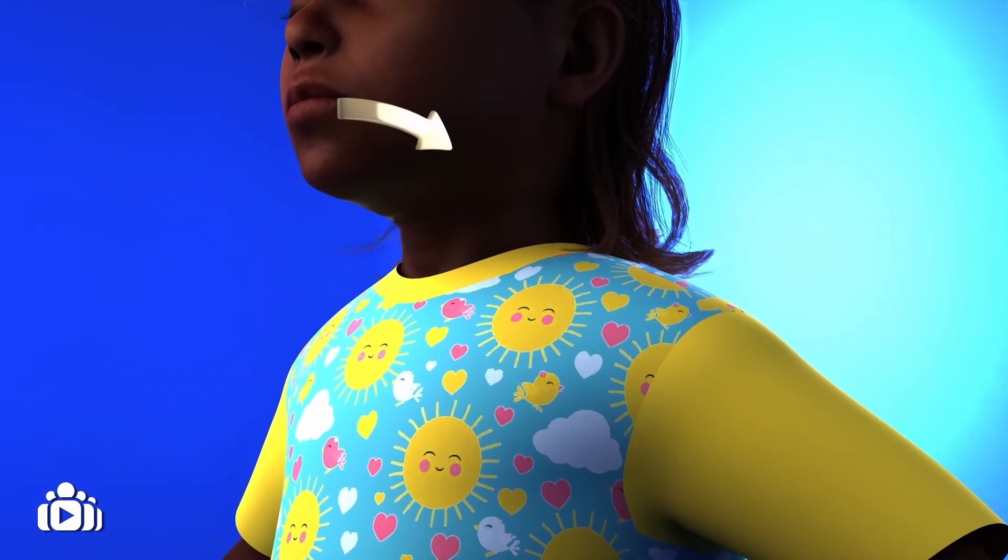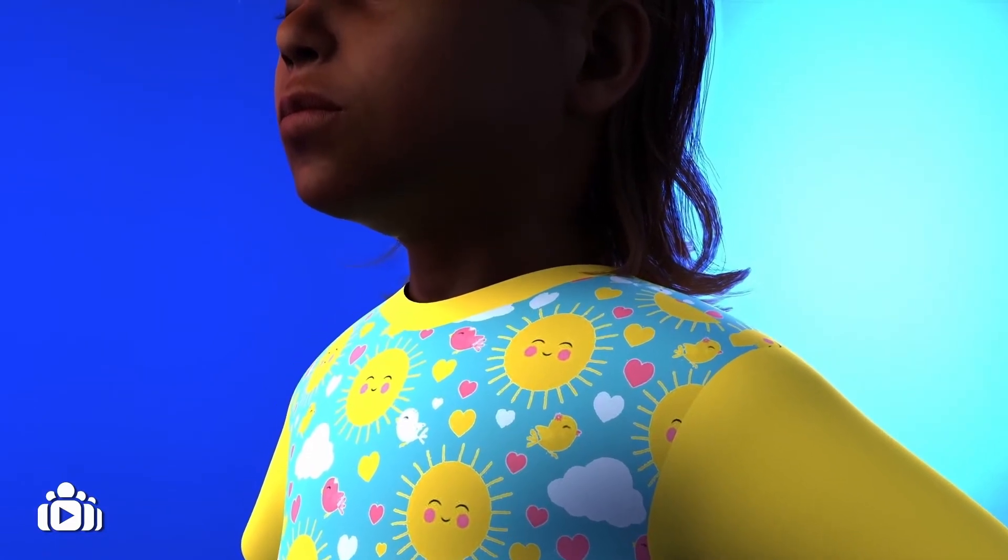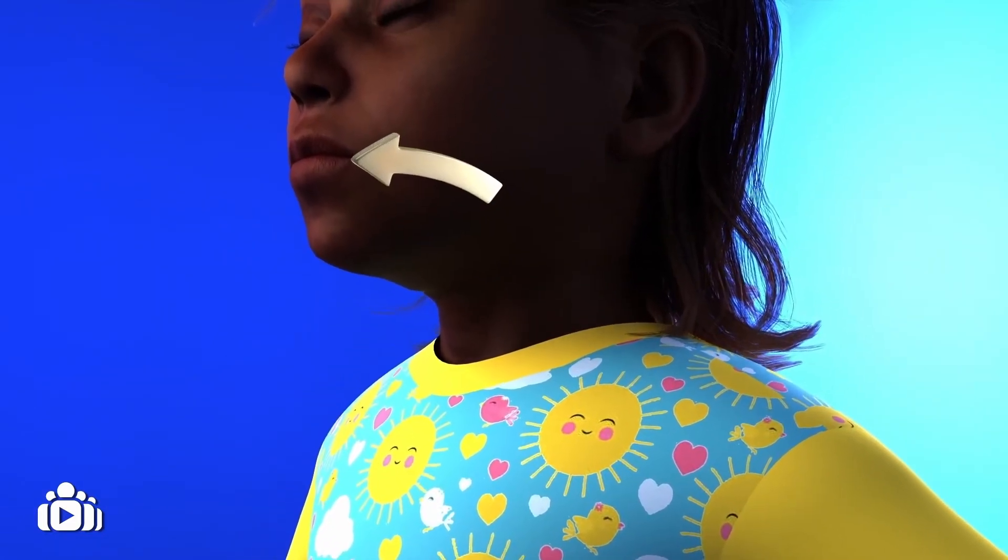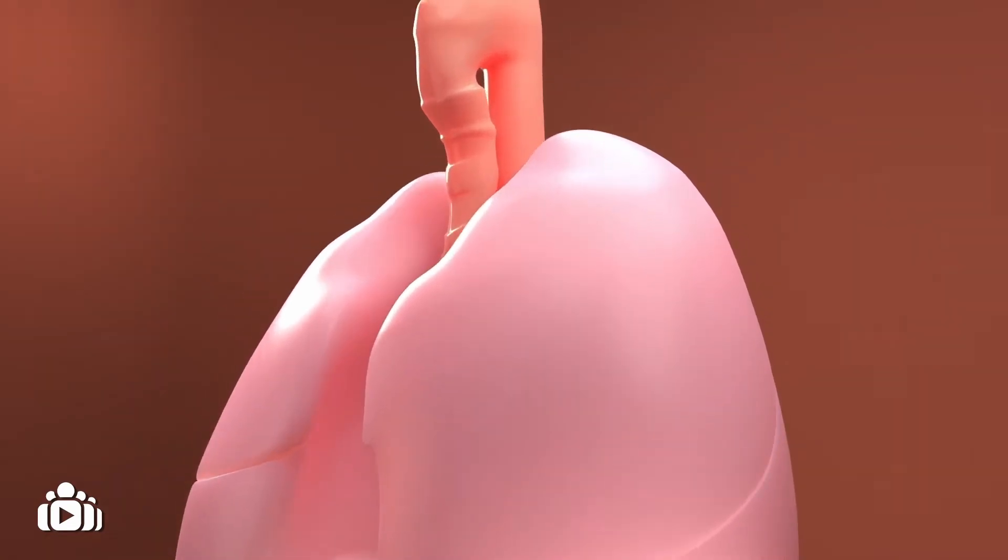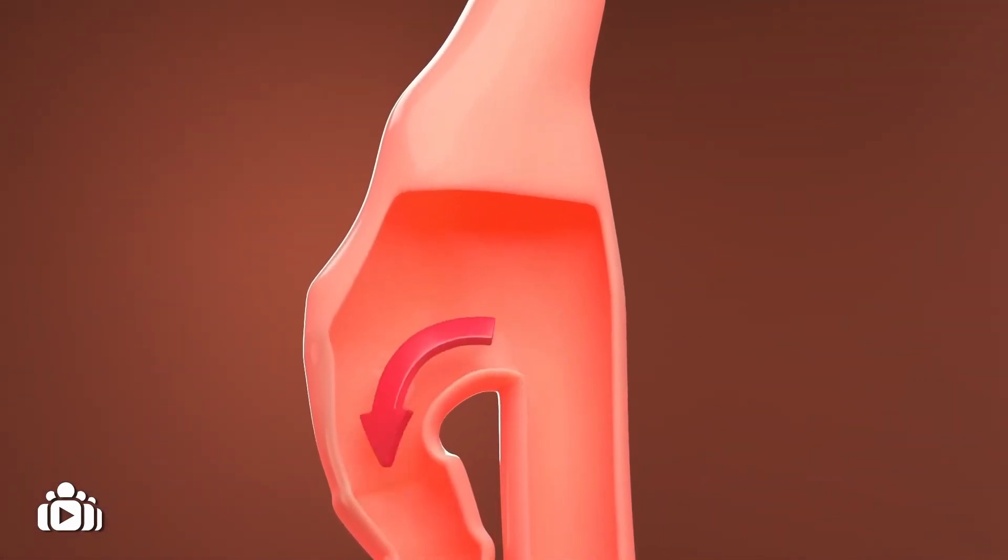Individuals with achalasia present with difficulties swallowing food and liquid. Food and saliva built up in the esophagus often travels back to the mouth. Sometimes during breathing, saliva and or food can also enter the lungs. This is called aspiration.